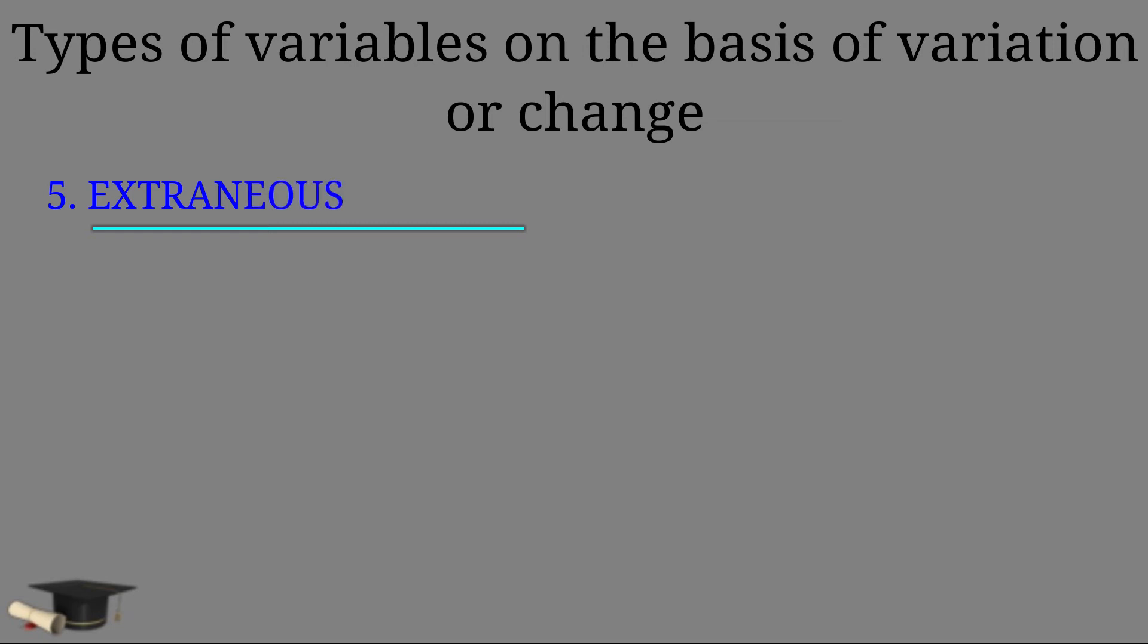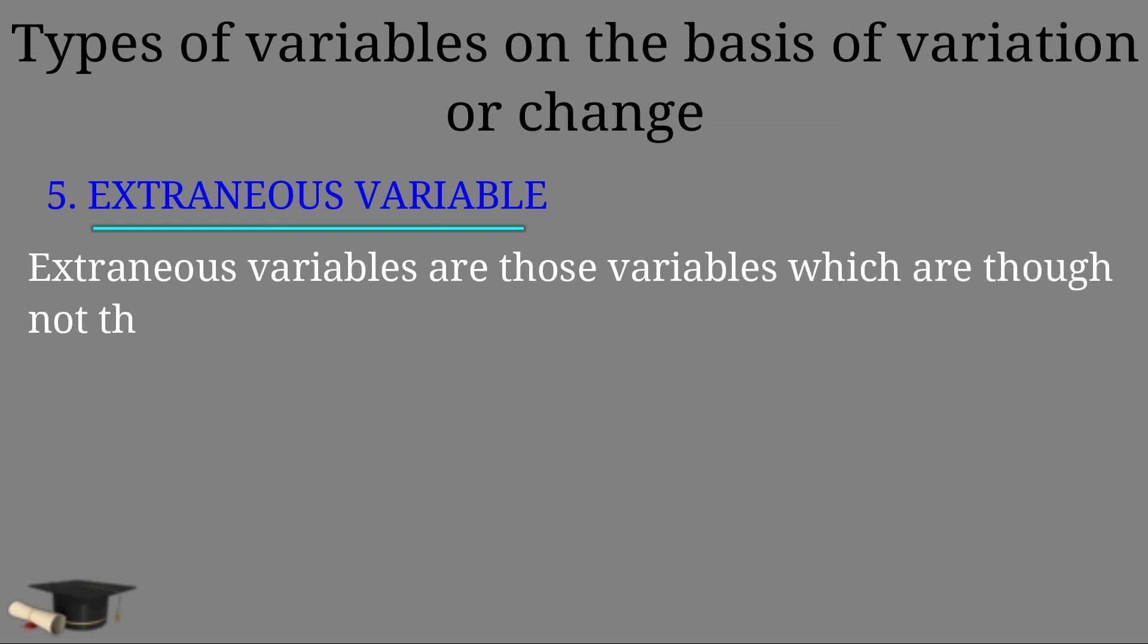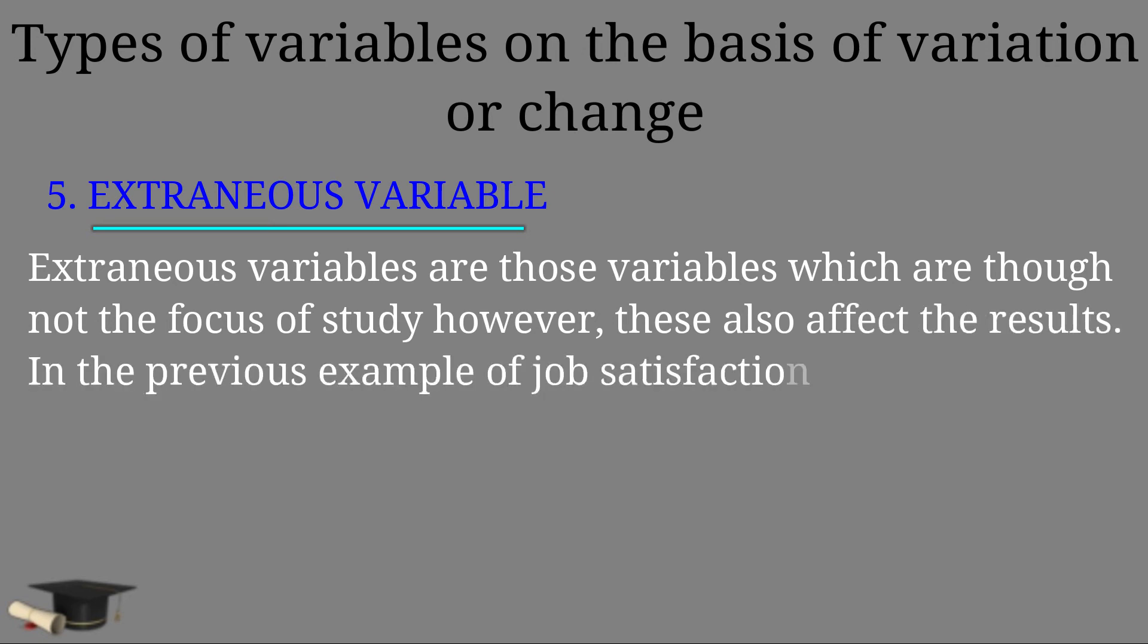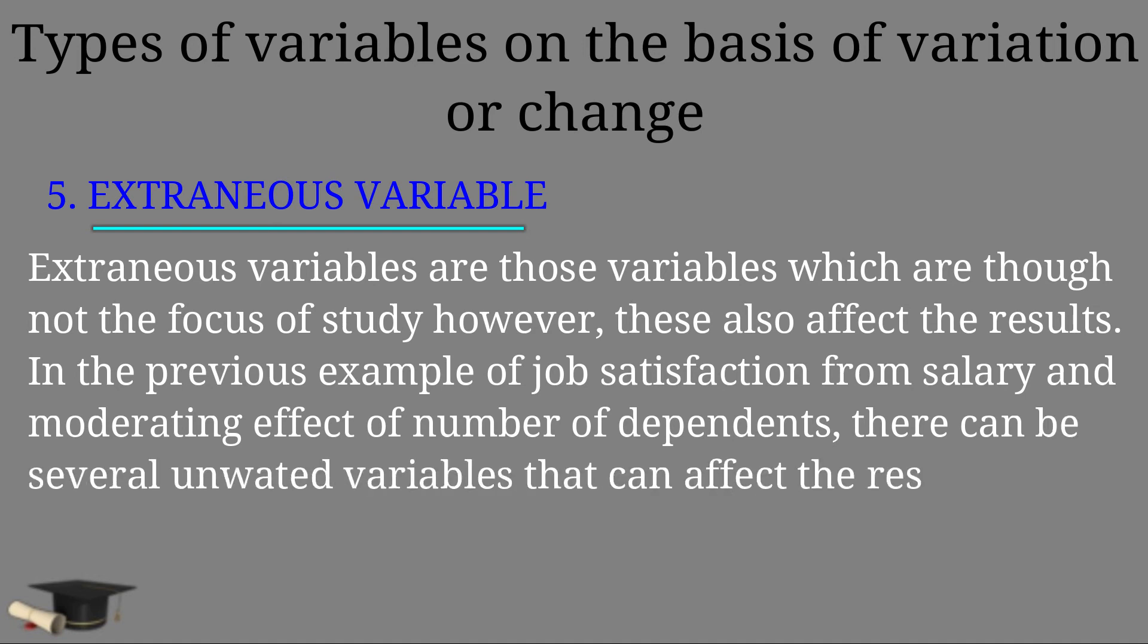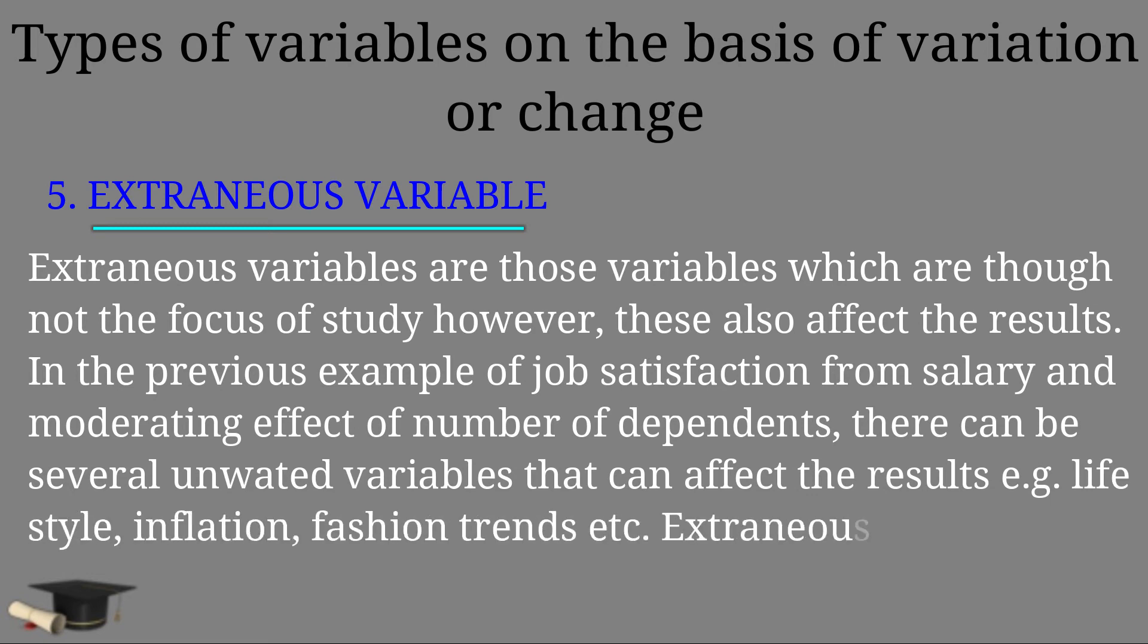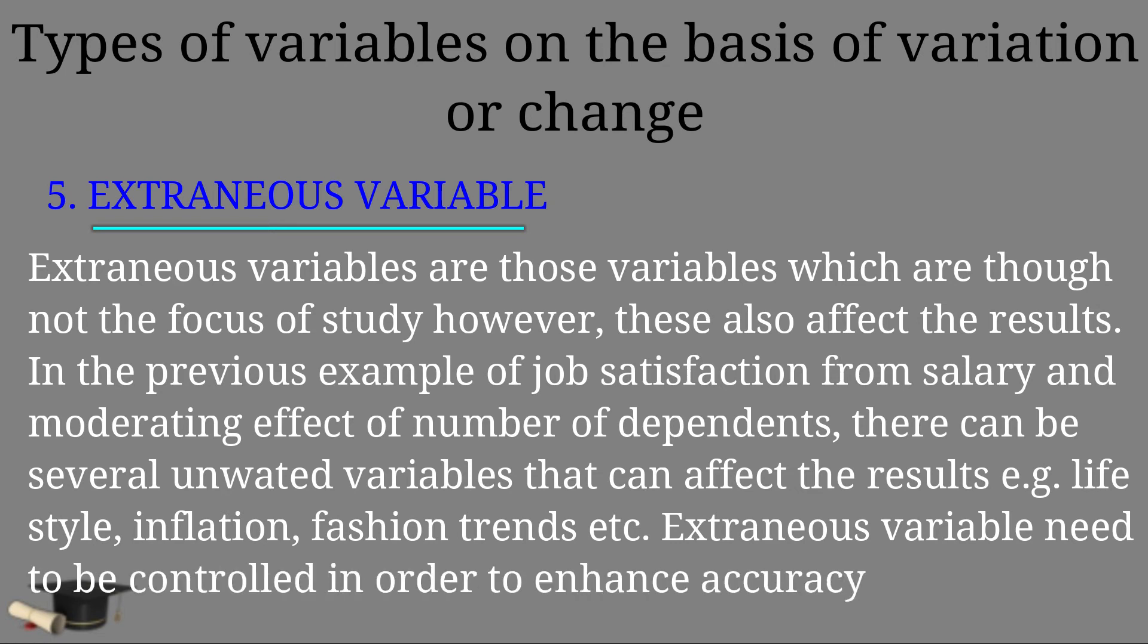Number five, extraneous variable. Extraneous variables are those variables which are though not the focus of study. However, these also affect the results. In the previous example of job satisfaction from salary and the moderating effect of number of dependents, there can be several unwanted variables that can affect the results. For example, lifestyle, inflation, fashion trends, etc. Extraneous variables need to be controlled in order to enhance accuracy of the research.